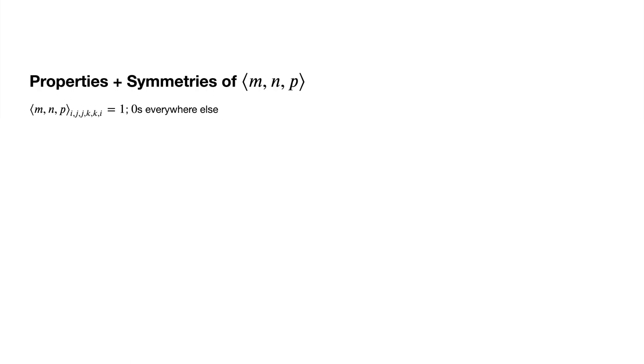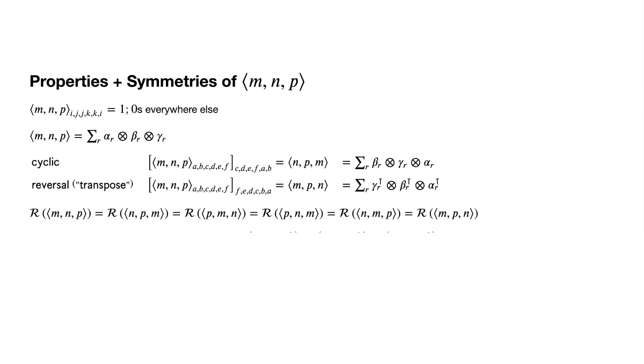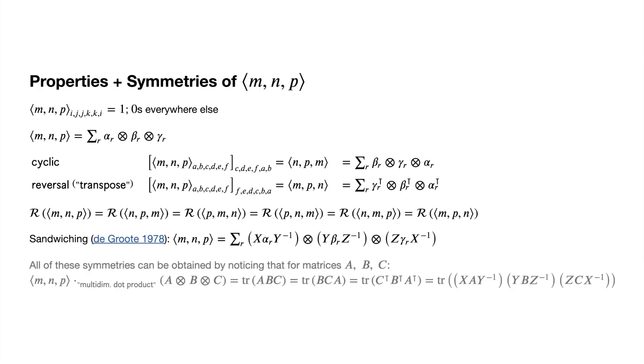A matrix multiplication tensor has ones at indices of the form (i,j), (j,k), (k,i) and zeros everywhere else. If you cyclically rotate the indices by two units, you get the NPM tensor. If you reverse the order of the indices, you get the MPN tensor. And crucially, you can replicate these transformations by manipulating the alpha, beta, and gamma terms in any rank decomposition of the original MNP tensor. This means that all matrix multiplication tensors involving any ordering of MNP all have the same rank, because any r-rank decomposition of one of them can be transformed to become r-rank decompositions of all the others. There is one more type of symmetry worth noting, known as sandwiching. Given a rank decomposition of a matrix multiplication tensor, you can insert matrices and their inverses as shown and end up with another valid decomposition of that same tensor. This property is unique to matrix multiplication tensors.